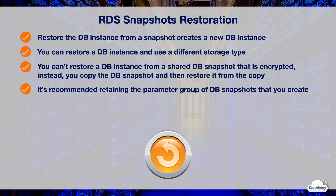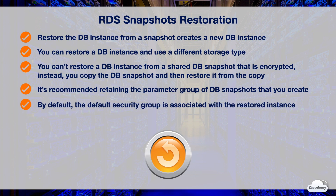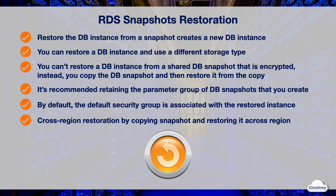AWS recommends that you retain the parameter group for any DB snapshots you create, so that you can associate your restored DB instance with the correct parameter group. You can specify the parameter group when you restore the DB instance. When you restore a DB instance, the default security group is associated with the restored instance by default. As soon as the restore is complete and your new DB instance is available, you can associate any custom security groups used by the snapshot you restored from. You can restore a DB instance from a DB snapshot across regions by copying the snapshot to the destination region and restoring it to a new DB instance in that region.